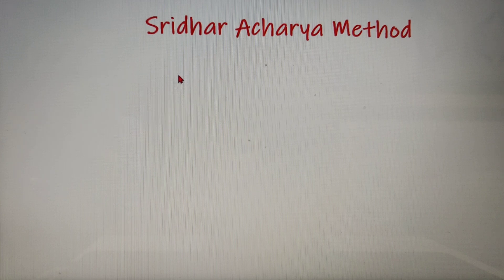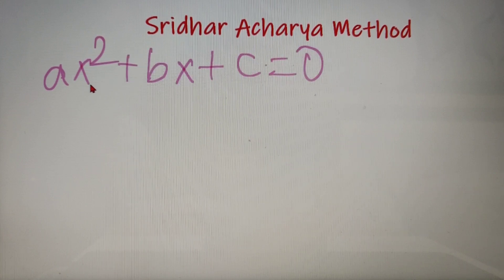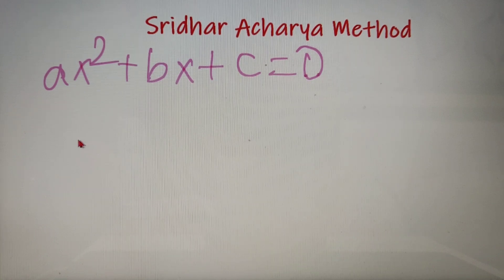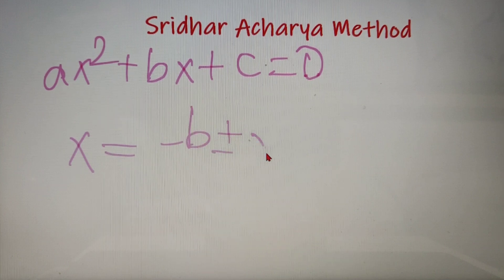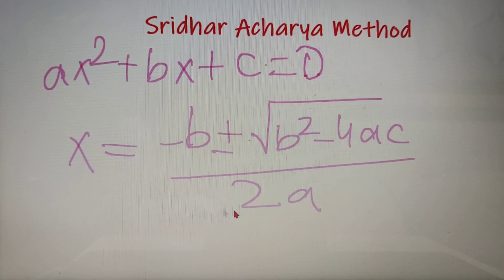Now let's discuss the Sridhar Acharya method. Suppose we have an equation of the form ax² + bx + c = 0, where a is not equal to 0. Then according to the Sridharacharya method, you can use the formula: x = (−b ± √(b² − 4ac)) / 2a. This formula is called the Sridharacharya formula, and this method of solving the roots of a quadratic equation is called the Sridharacharya method.